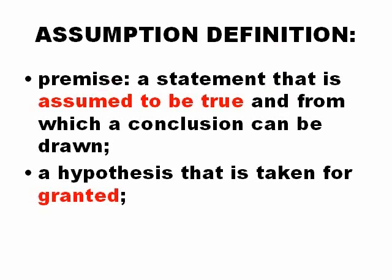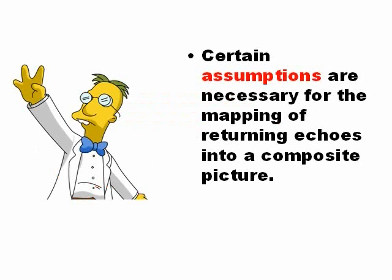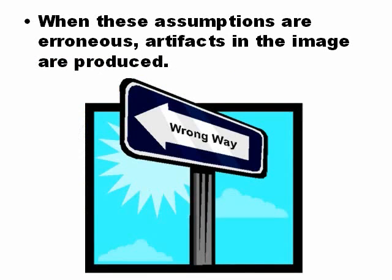What is an assumption? An assumption is something that you believe is true — something that you suppose is granted, but sometimes does not happen. Certain assumptions are necessary to produce the picture, but sometimes they are not true, and this is why artifacts are produced. When these assumptions are erroneous, artifacts are produced.